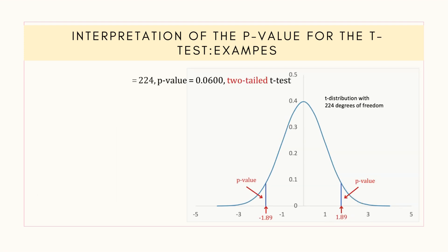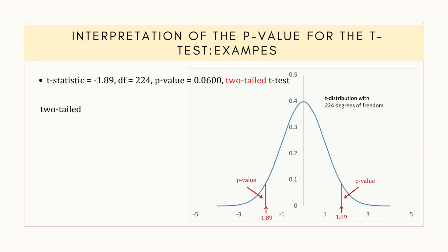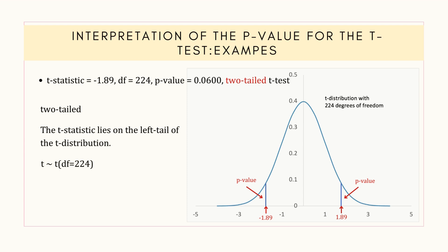Considering the third case. The hypothesis test is two-tailed. The t-statistic lies on the left tail of the t-distribution. The t-statistic follows a t-distribution with 224 degrees of freedom, and the p-value is 0.006.